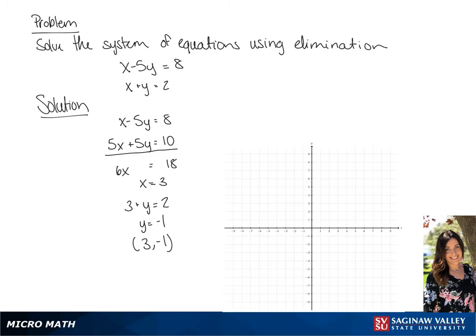We're going to show this by graphing. We're going to start by graphing the first equation. If we substitute 0 for x, we get y equals negative 8 over 5. And if we substitute 0 for y, we get x minus 5 times 0 equals 8, so x equals 8. Now we can graph this line.